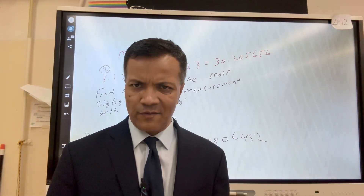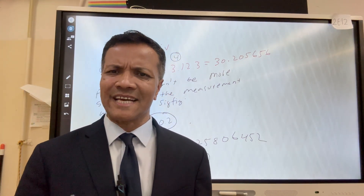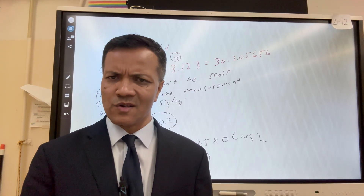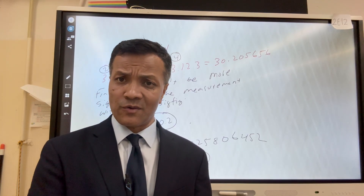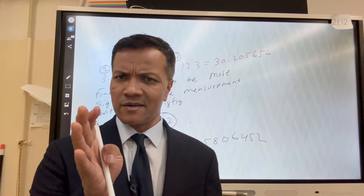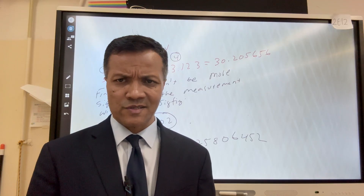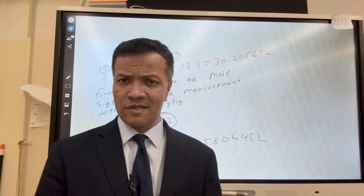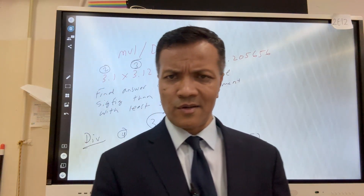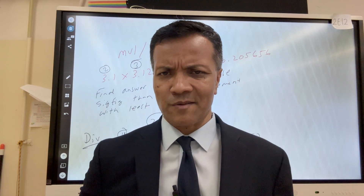So today we covered sig figs. Tomorrow we are going to do order of magnitude, which is 180 degrees different from sig figs. In sig figs, we care about precision and reliability, and we use uncertainty to account for human error. But order of magnitude is just estimation — guessing. See you next time.